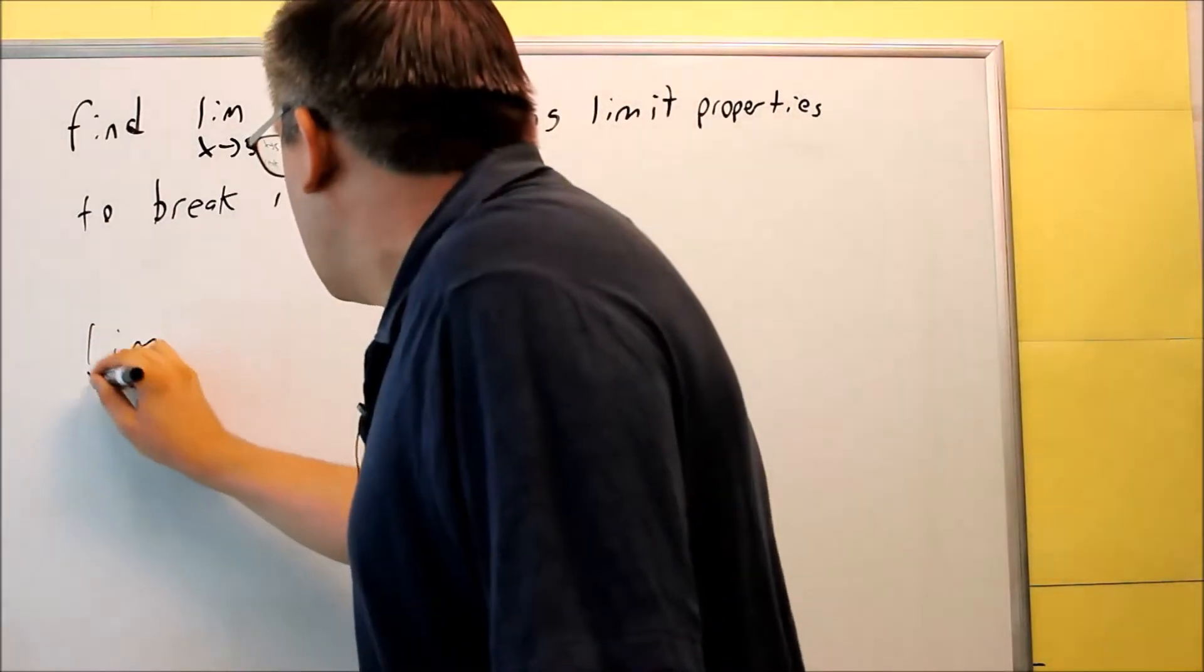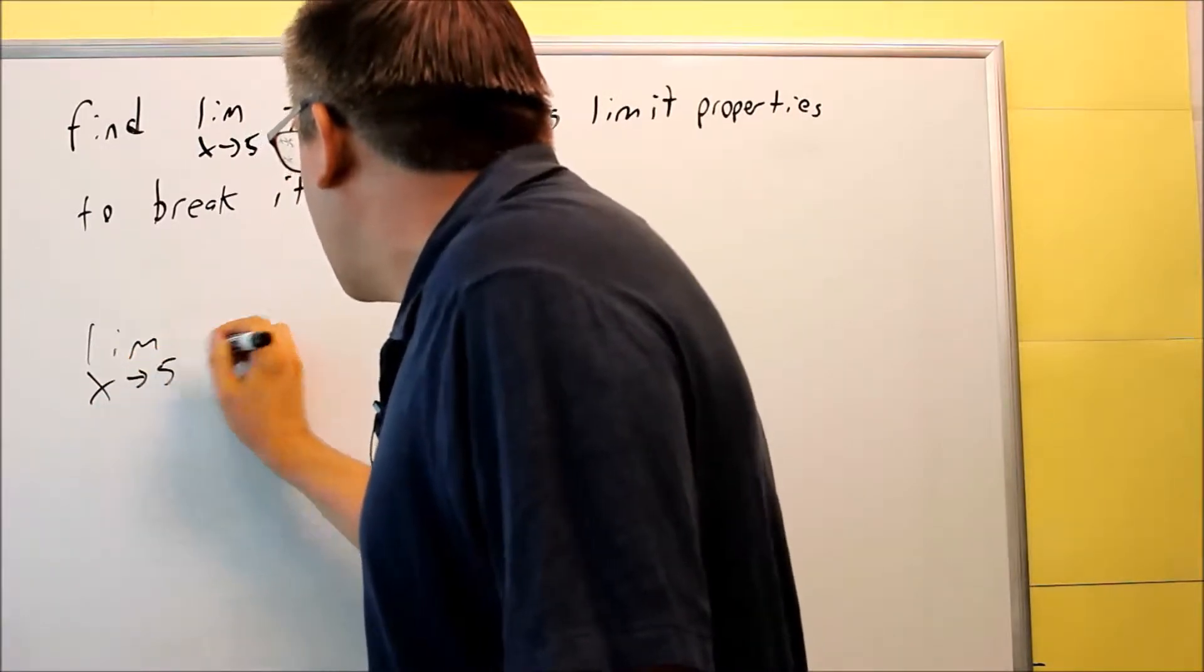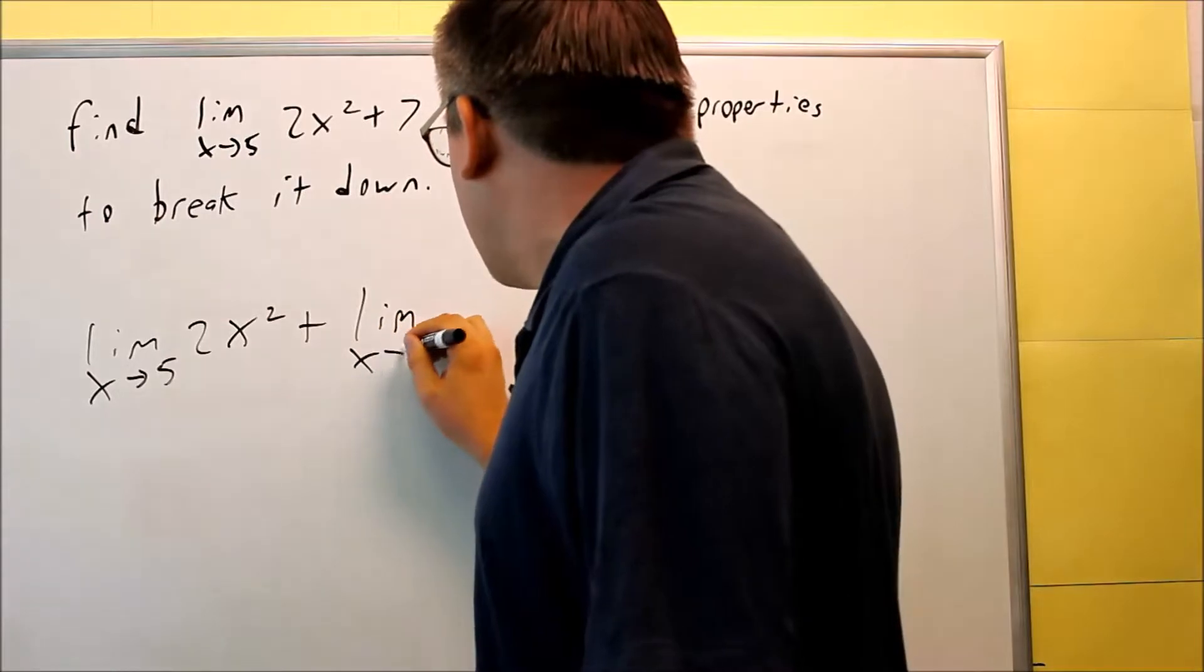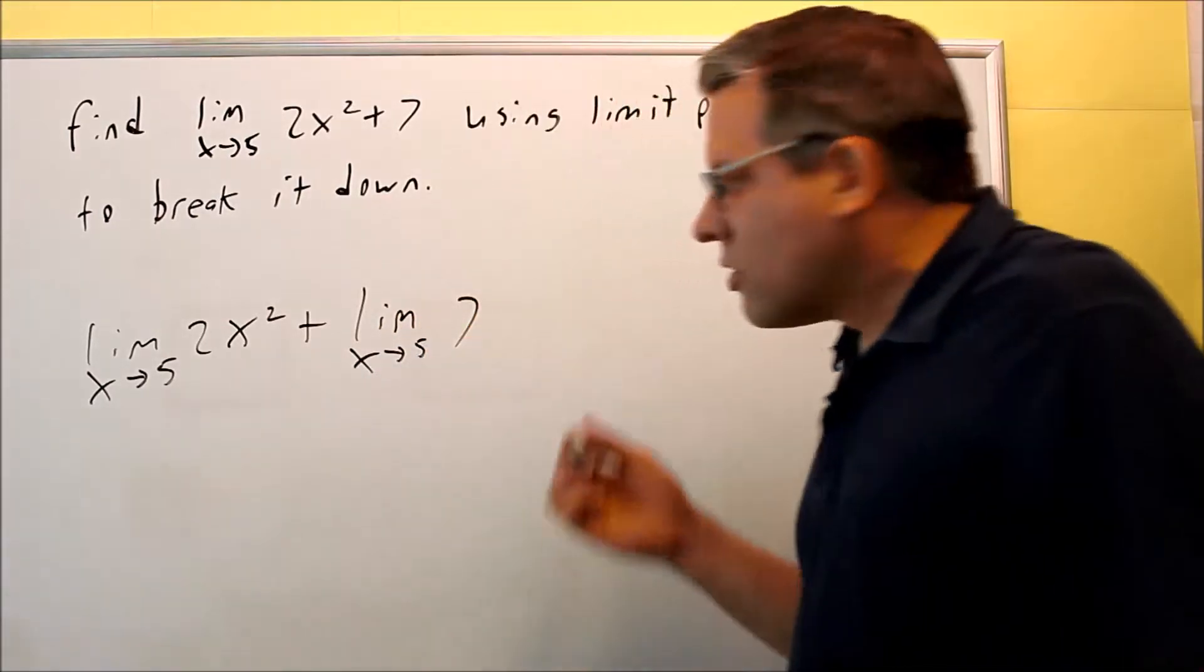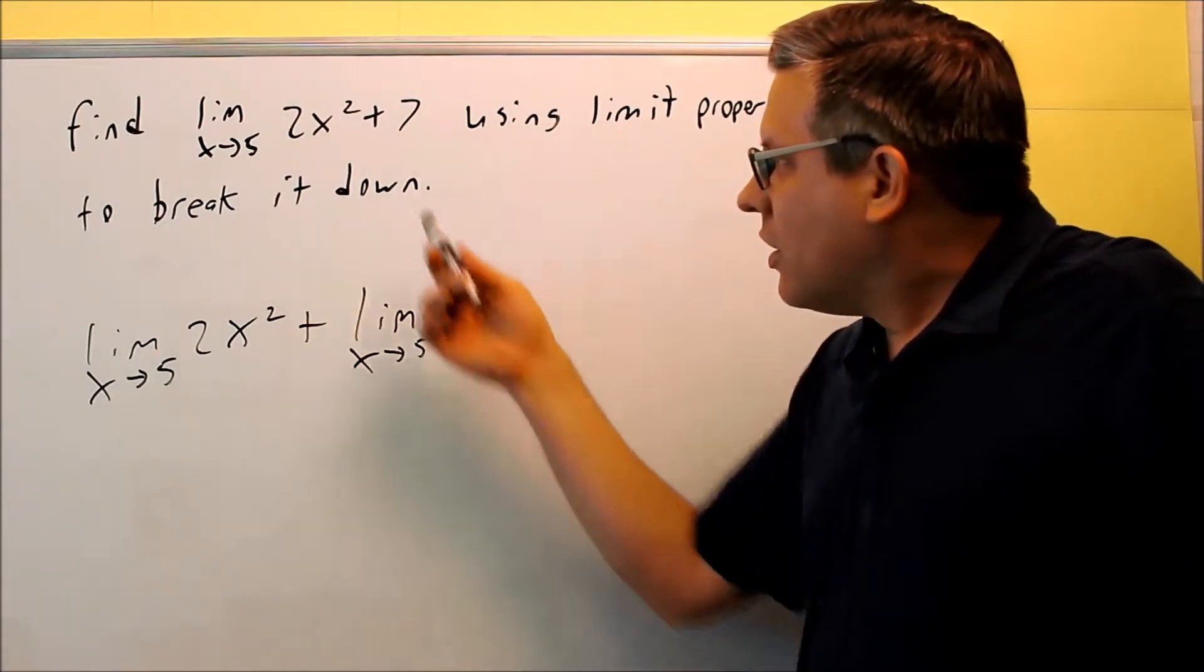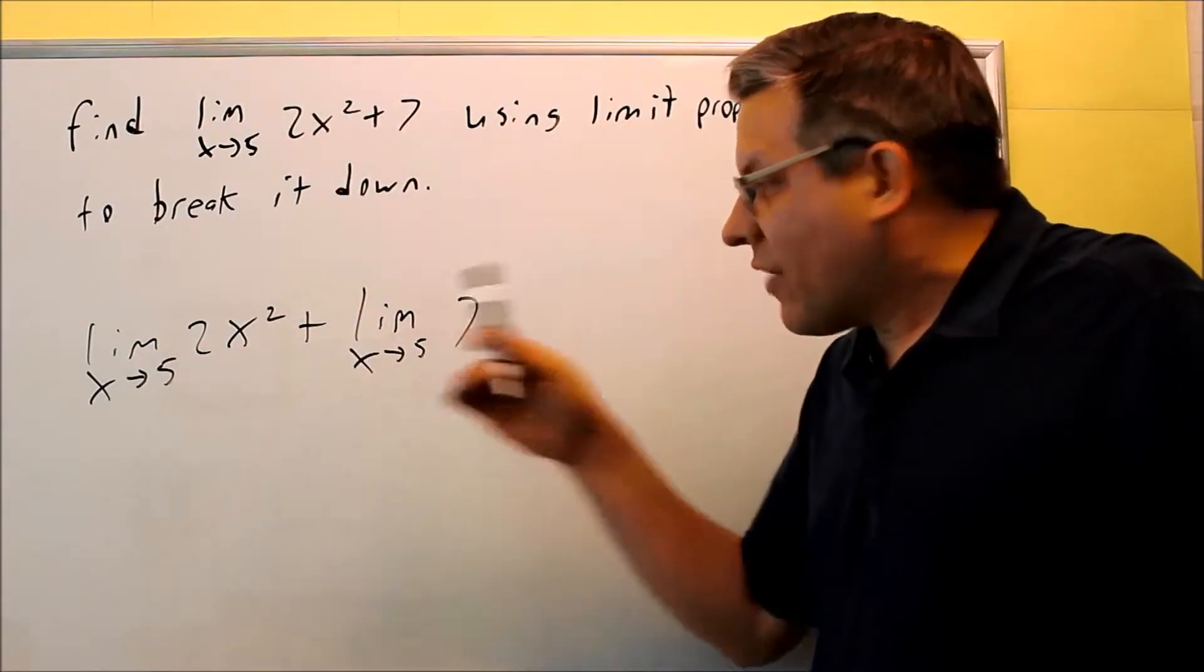So first, we're going to do limit x approaches 5 of 2x squared, and then we're going to do the limit x approaches 5 of 7. So of course, whatever limit this first one is, you're going to do that to all the terms; both of these have to go to 5.